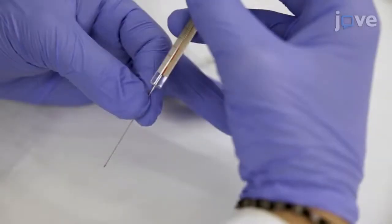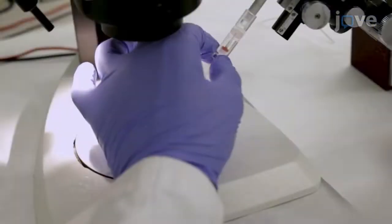Load a pulled glass pipette with two microliters of calcium green 1 dextrin solution and place it in the microinjector.